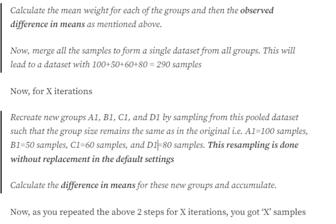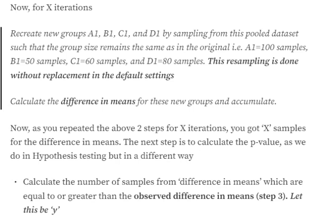When you notice, all samples from different groups get mixed up, so group A1 won't have all the samples from A — it now has a mix of samples from all the remaining groups too. This resampling is done without replacement by default. We then calculate the difference in means for all these X iterations — in each iteration creating new groups and calculating the difference in means.